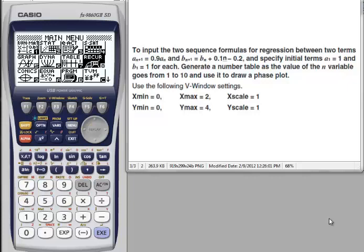Graphing a phase plot from two numeric sequences. Example: input the two sequence formulas for regression between two terms a sub n plus 1 equals 0.9 a sub n and b sub n plus 1 equals b sub n plus 0.1 times n minus 0.2, and specify initial terms a sub 1 equals 1 and b sub 1 equals 1 for each. Generate a number table as the value of the n variable goes from 1 to 10 and use it to draw a phase plot.